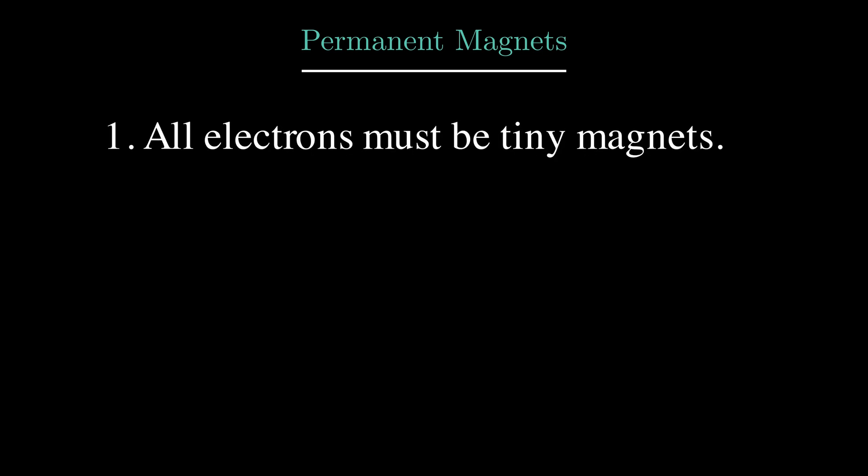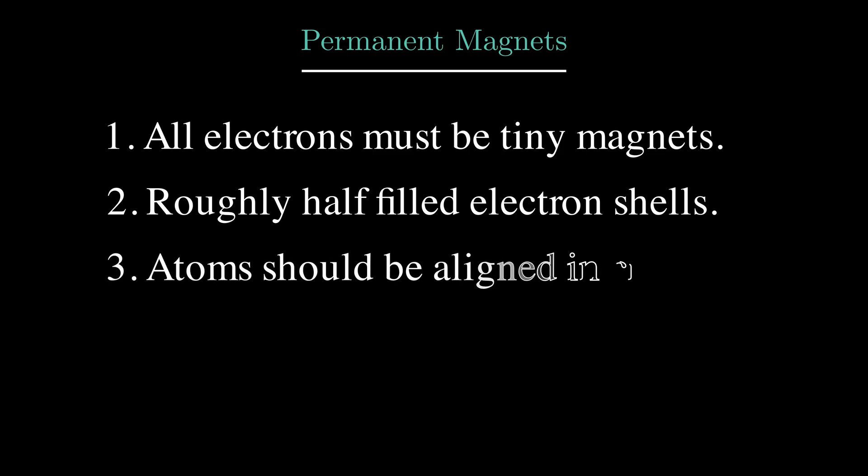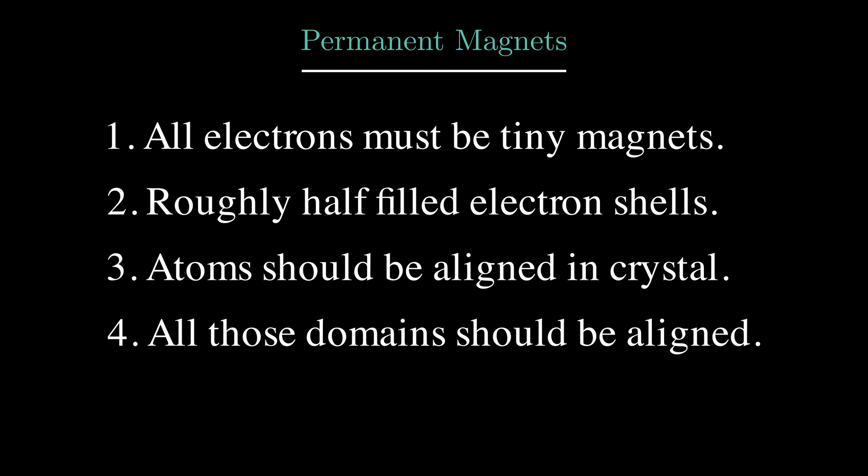So, to sum it up, for a material to be a permanent magnet, you need these four things. Electrons themselves need to be tiny magnets, which all electrons are. These electrons need to be in atoms that have roughly half filled electron shells. The crystal structure needs to encourage the atoms to align their magnetic fields, and the magnetic domains need to be aligned.